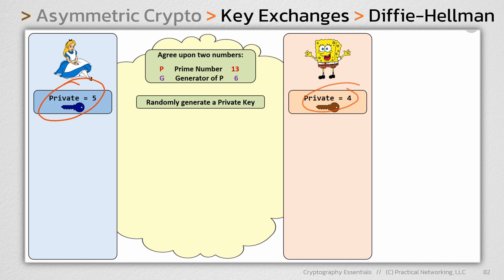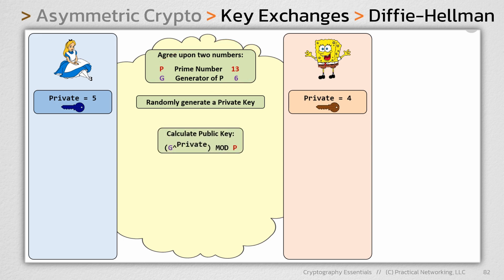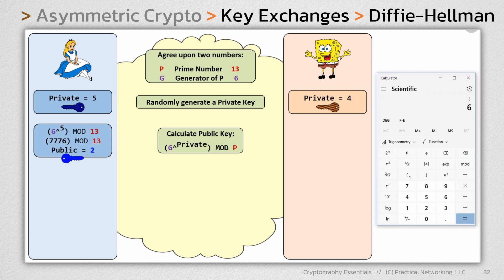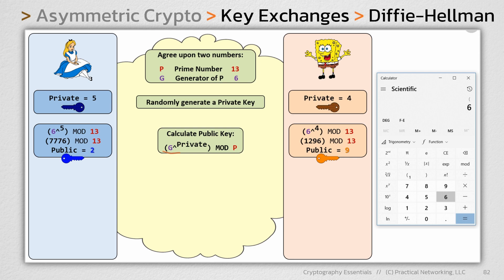They're then going to use their private values in combination with P and G to calculate their public key. They're going to take the generator (6), raise it to their private values (5 and 4 respectively), and then figure out the remainder when divided by 13. So Alice will take 6 raised to the 5th power, then figure out the remainder when divided by 13 — that gets her an answer of 2. Bob is going to do the same thing using his private value: take the generator 6, raise it to his private value of 4, then find the remainder when divided by 13, and that's going to get him 9.